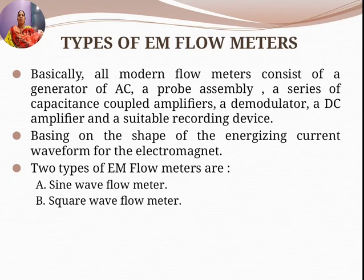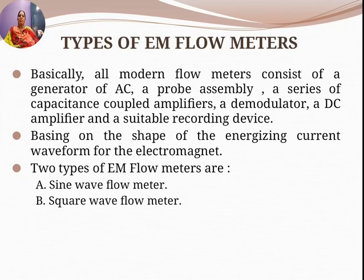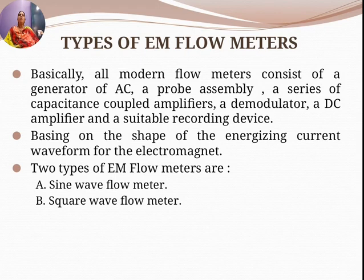Based on the shape of the energizing current waveforms for the electromagnet, there are two types of electromagnetic flow meters: sine wave flow meters and square wave flow meters.